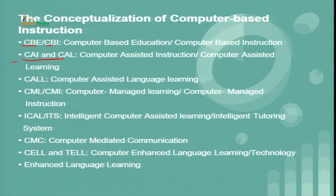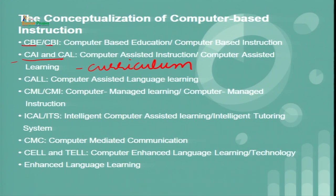Coming to the second point: CAI and CAL — computer-assisted instruction and computer-assisted learning — are used to refer to computer learning that guides the learner through a prescribed curriculum. When we say curriculum, we mean the materials used in prescribed teaching and learning. According to many scholars, a number of functions are performed by the teacher, the learner, and the computer. The terms 'aided' and 'assisted' indicate that it becomes part of the learner's curriculum experience.